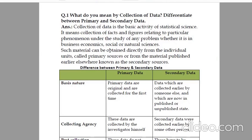Such material can be obtained directly from the individual units called primary sources. Primary sources means individual units means directly what you are getting. If information is coming through anyone, then our data will be secondary data from material published earlier elsewhere known as secondary sources.